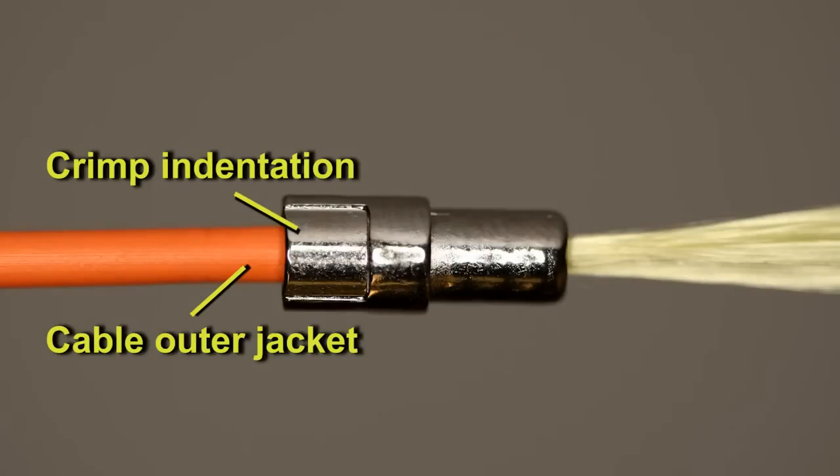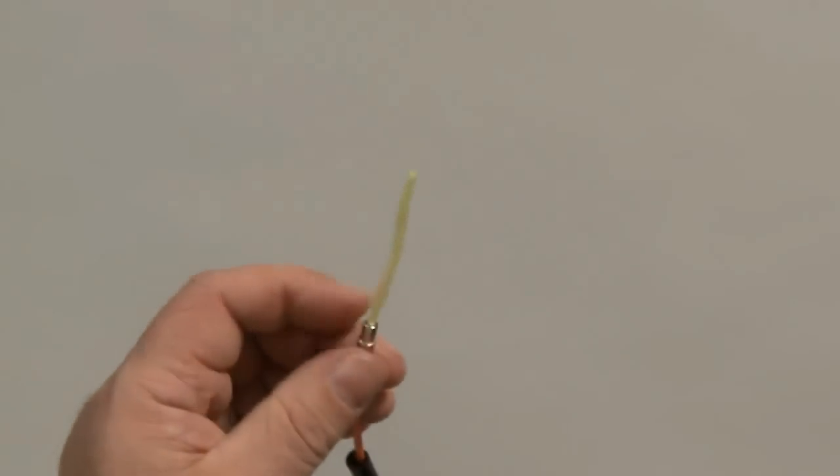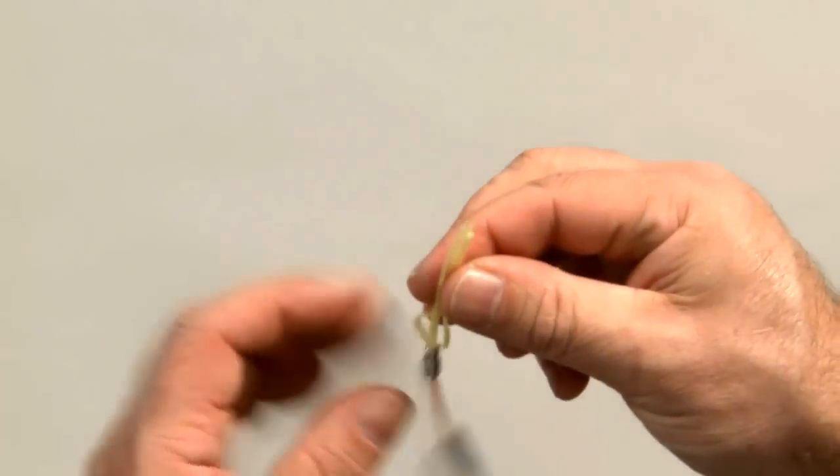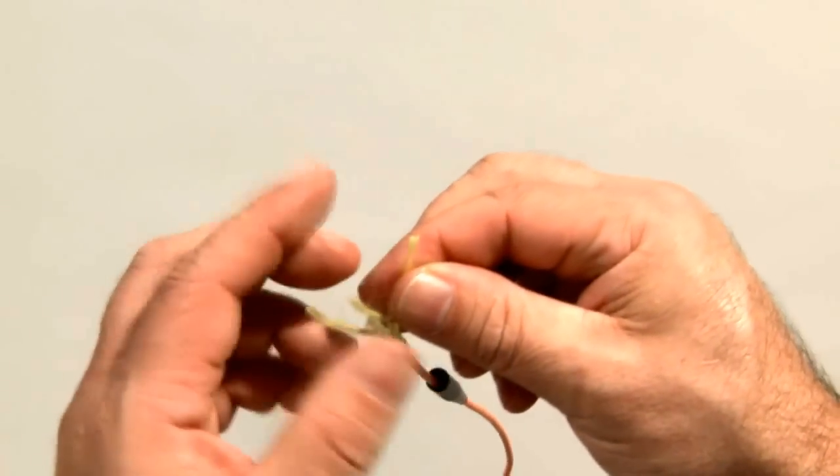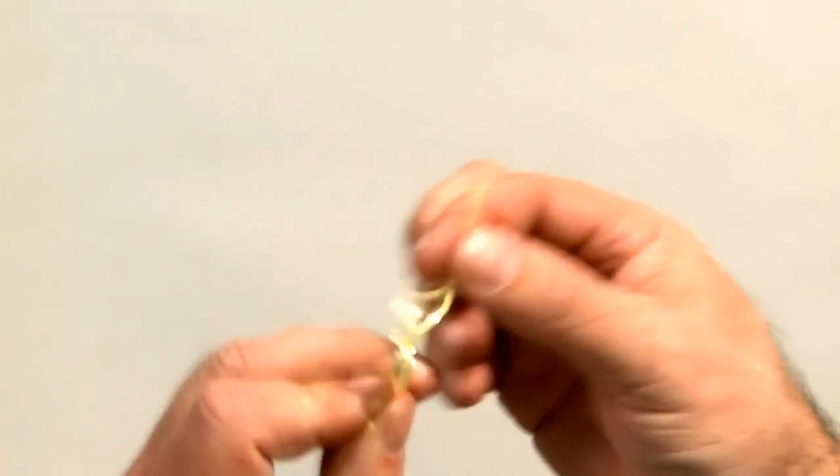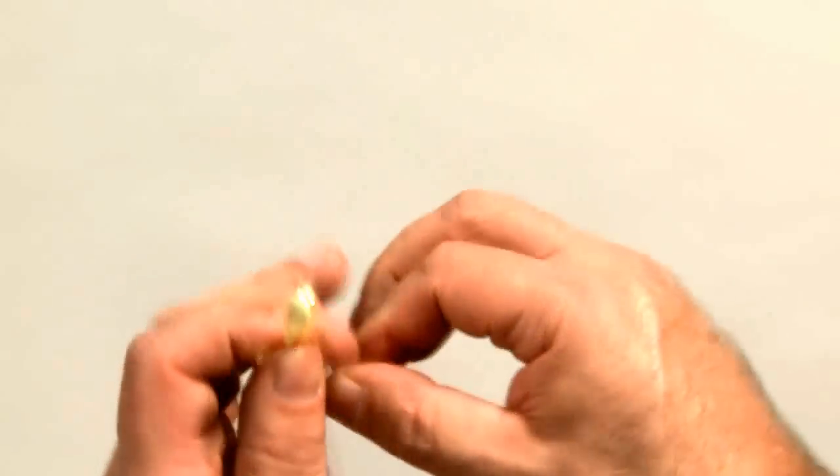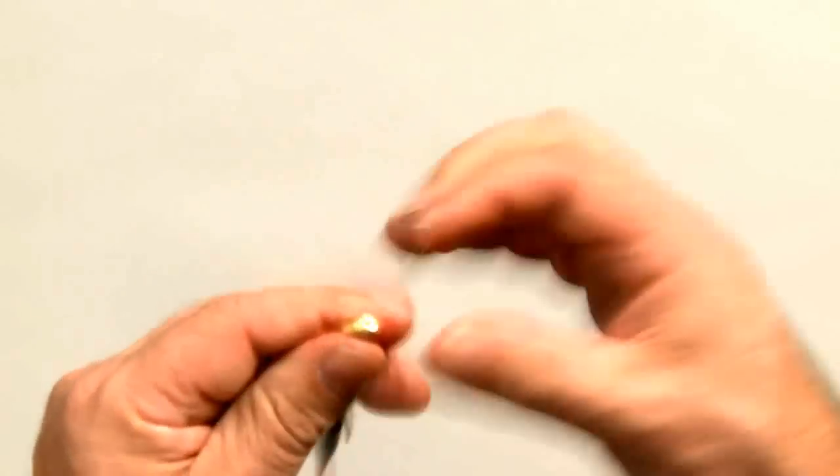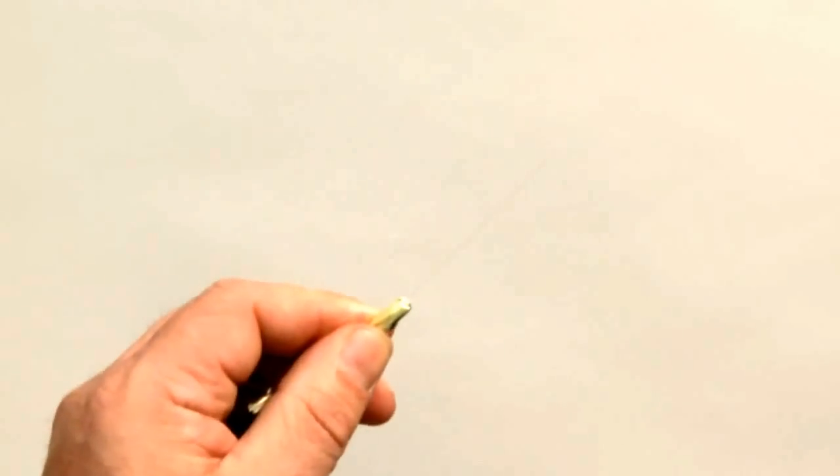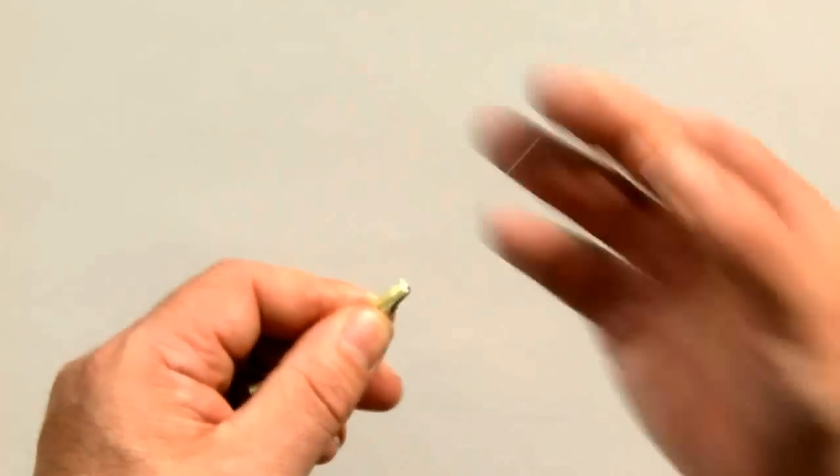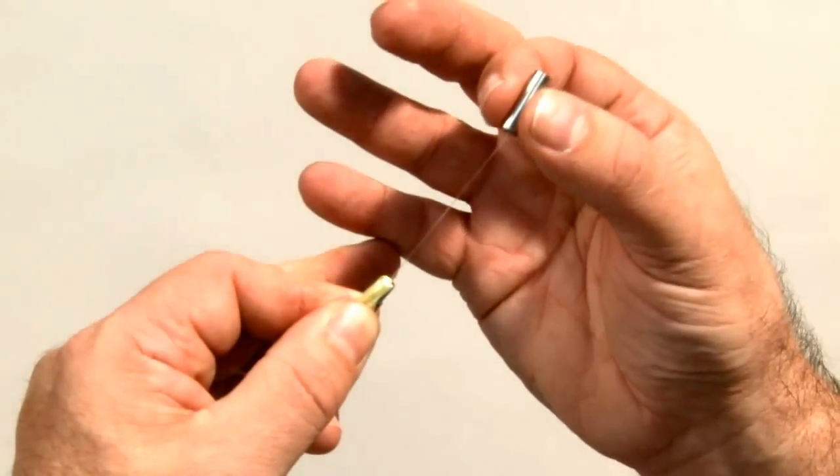This will leave a depression on the cable anchor where it is crimped to the cable jacket. Divide the aramid yarn into two parts and pull back towards the cable, baring the fiber underneath. Settle the sleeve onto the cable anchor until it bottoms out. Be careful not to touch the bare fiber. Finger oils can lead to termination problems.